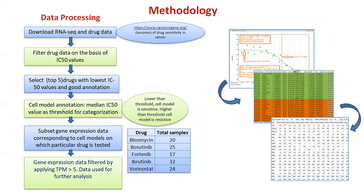Cell model annotation was done based on the median IC50 value as a threshold for categorization. Cell models with an IC50 value lower than the median threshold were classified as sensitive, and those with a higher IC50 value were considered resistive. The gene expression data was then subsetted corresponding to the cell models on which each particular drug was tested, and further filtered by applying a TPM threshold of greater than 5.